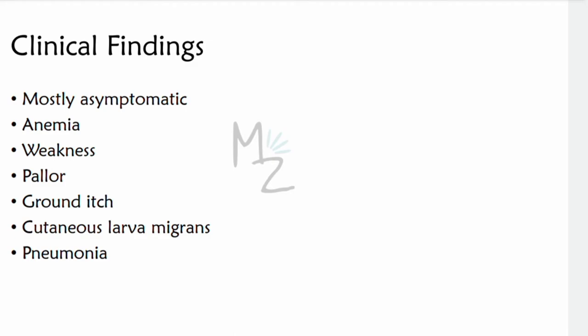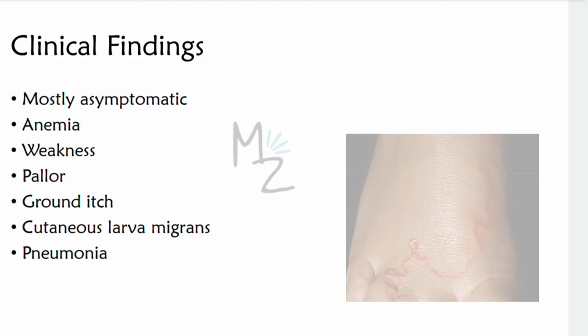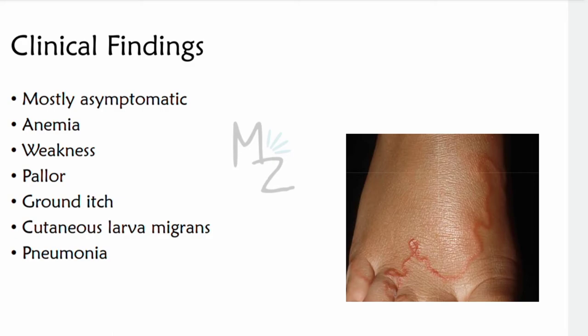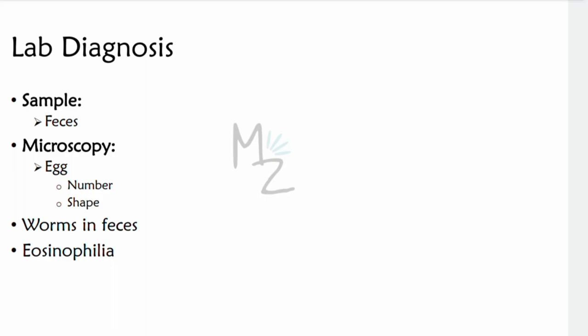Clinical findings: hookworm infection is mostly asymptomatic, but symptoms can occur based on the location of the worm — either in the lungs or the intestine. Weakness and pallor accompany the microcytic anemia caused by blood loss. Ground itch can occur, which is a pruritic papule or vesicle at the site of larval entry into the skin. Cutaneous larva migrans can also occur when the worm gets entrapped in the superficial layers of the skin, especially the foot, causing thread-like lesions, irritation, or pruritus. Pneumonia with eosinophilia can also occur because larval migration occurs through the lungs.